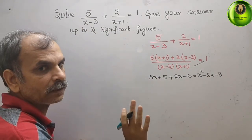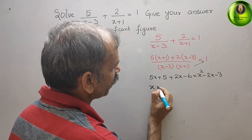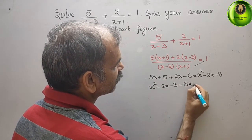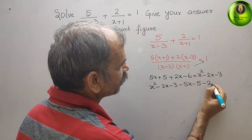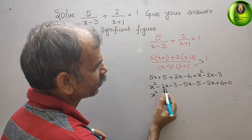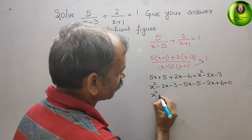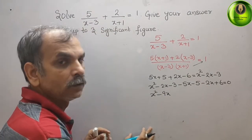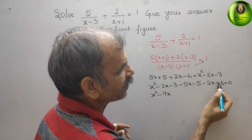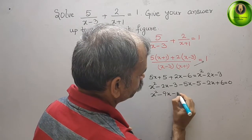Now bring everything to one side. We get: x² - 2x - 3 - 5x - 5 - 2x + 6 = 0. Simplifying: x² - 9x - 2 = 0.